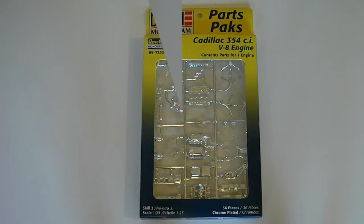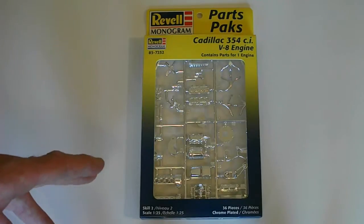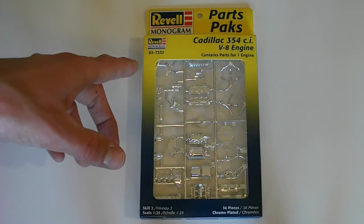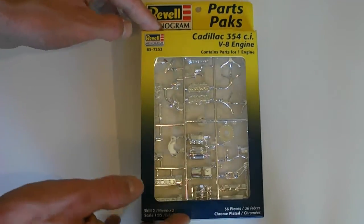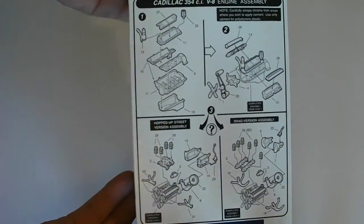The Cadillac 354 cubic inch V8 engine, probably the most rare out of these four that you're going to find as far as aftermarket accessory packs. This one only contains 36 parts, skill level 2, 1/25th scale, 7252 for the model number. Like I said, it looks the exact same on the front. In the back here, they have the directions.